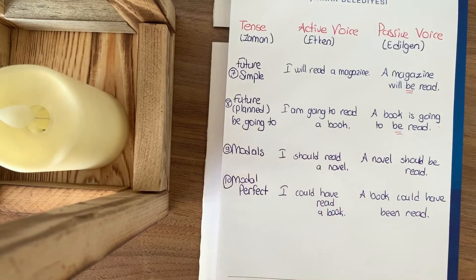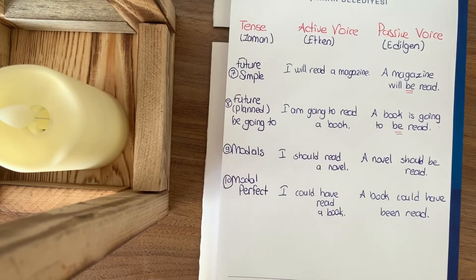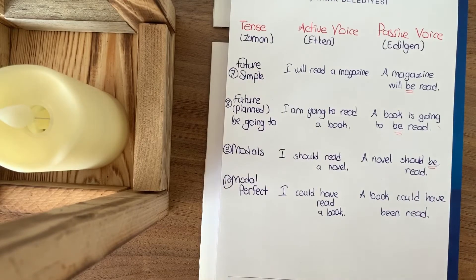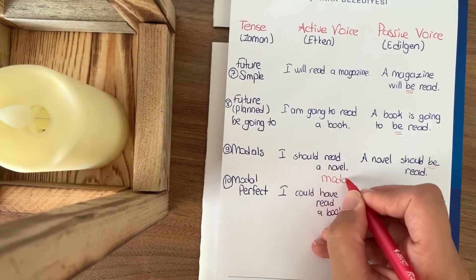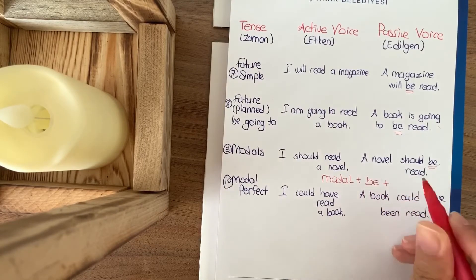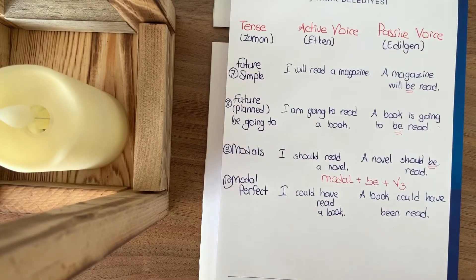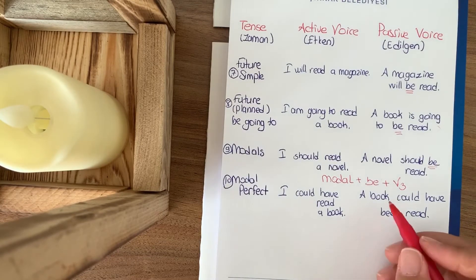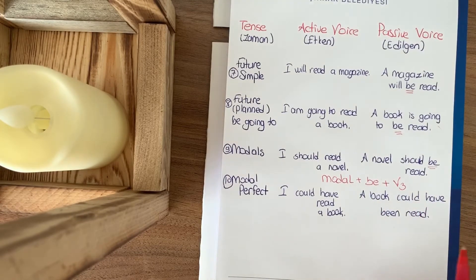Modals — bizim kipler: can, may, should, and all modals. For passive with modals: modal + be + verb three. 'I should read a novel' — Roman okumalıyım. Modal Perfect: 'I could have read a book' — Bir kitap okuyabilirdim. Passive: 'A book could have been read' — Kitap okunabilirdi.